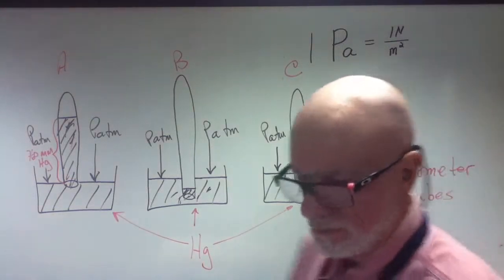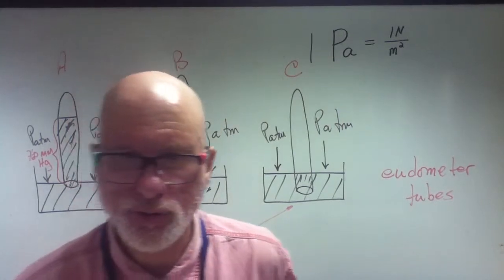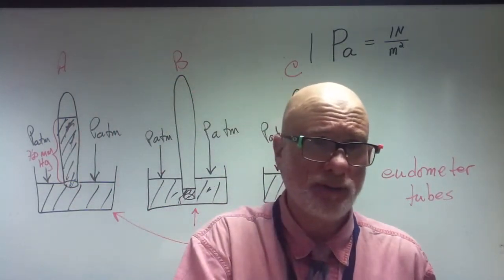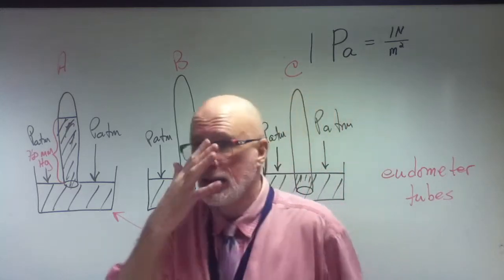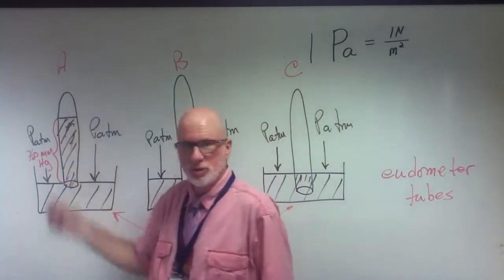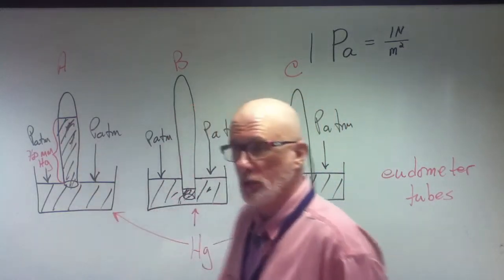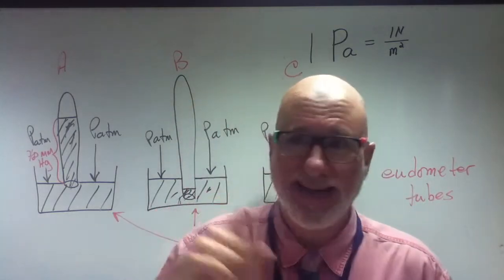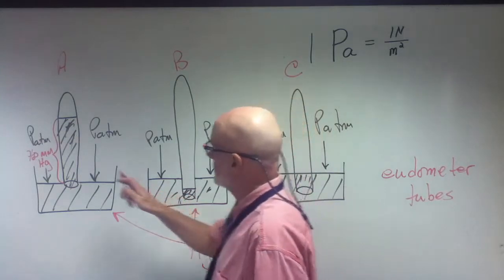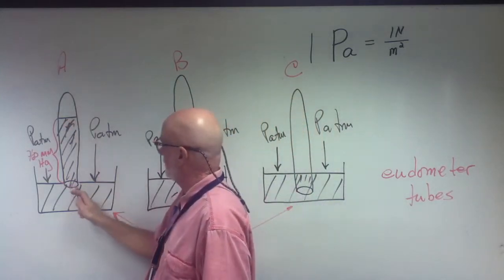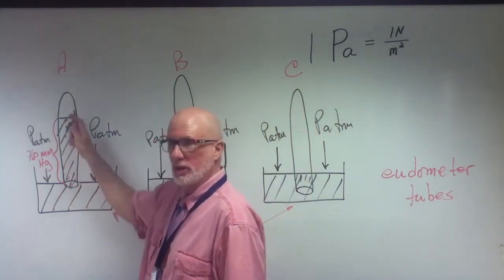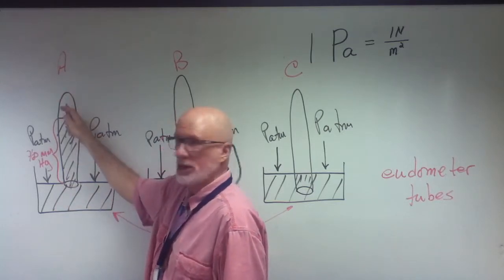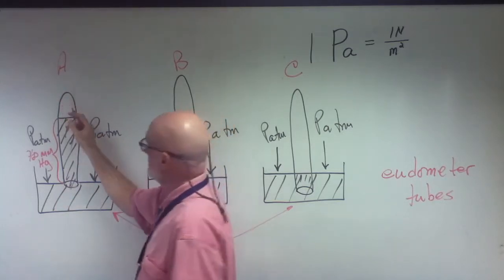These are three drawings on the board, two of which are right. Look up eudiometer. These are eudiometer tubes. A eudiometer tube is simply a tube used in chemistry and physics that is open on one end, so fluid can flow in or out, and the other end is sealed — and this end is actually a vacuum.